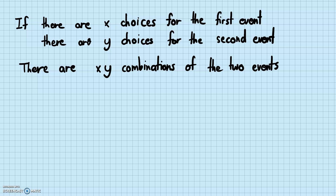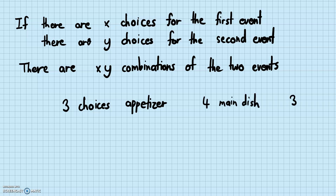This is not limited to just two events. For example, at a restaurant instead of just main dish and dessert, let's add an appetizer. There are three choices for appetizer and four choices for main dish. How many possible courses of the meal are there? You can take them two at a time: three appetizers and four main dishes gives 3 times 4 combinations, or 12 combinations.